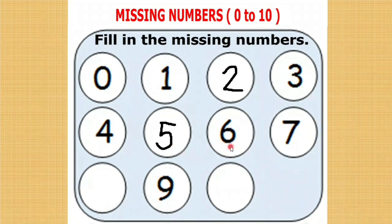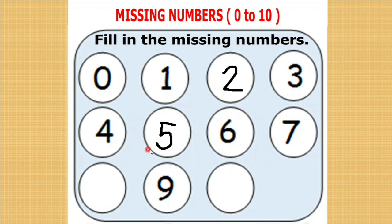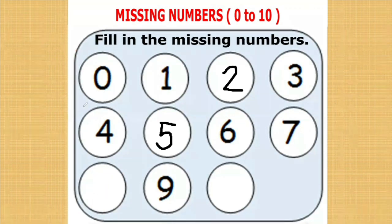After 5, 6 is there. After 6, 7 is there. After 7, the number is missing. To do this, you have to keep 7 in your mind and do the forward counting from 0. 0, 1, 2, 3, 4, 5, 6, 7, 8. What comes after 7? 8. Let us write 8.